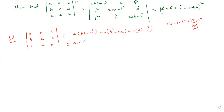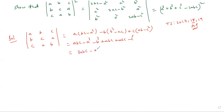Then what you get: abc minus a cubed, minus b cubed, plus abc, plus abc, minus c cubed. So altogether: 3abc minus a cubed minus b cubed minus c cubed.